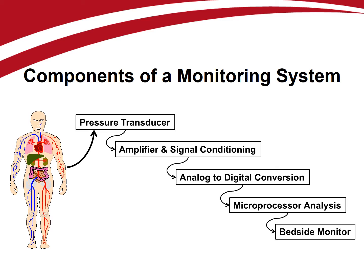A typical invasive blood pressure monitoring system consists of a catheter within the patient's blood vessel connected by tubing to a pressure transducer, which converts mechanical energy into an electronic signal. The tubing is continuously flushed with saline at a slow rate to help prevent blood clots from forming within the catheter. The electronic signal obtained must be amplified and cleaned to remove physiologic noise, then converted from an analog to a digital signal, which can then be filtered, analyzed, and displayed on the patient's bedside monitor. Measurement errors may occur at any point along this process.